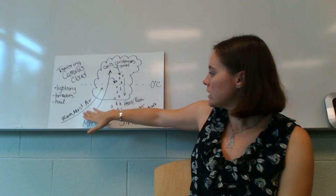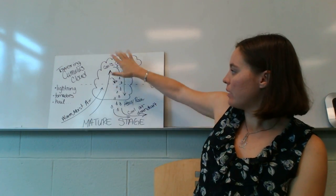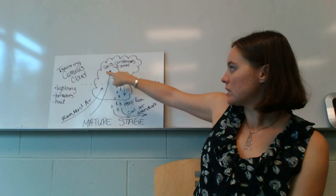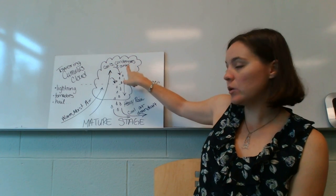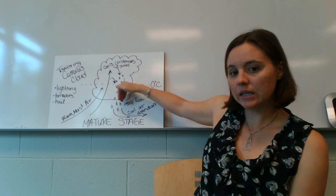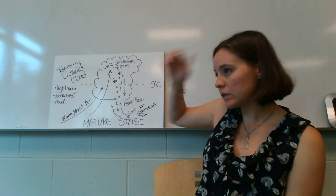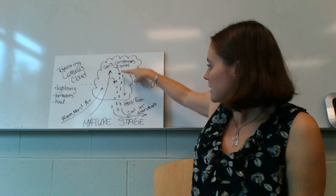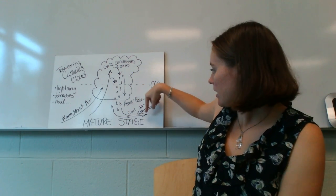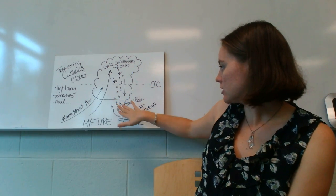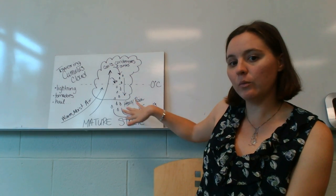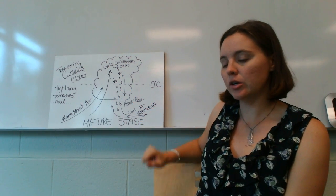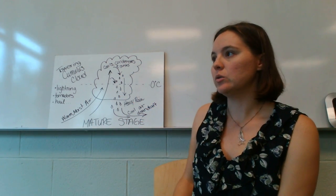We have warm moist air going up into the clouds — we call these updrafts. Once it gets up to the top of the cloud, it cools, condenses, and sinks. We get condensed water droplets or maybe even hail that starts to sink. The heavy rain starts to sink and brings cool air with it, so we get cool air downdrafts that are starting to cool the ground.